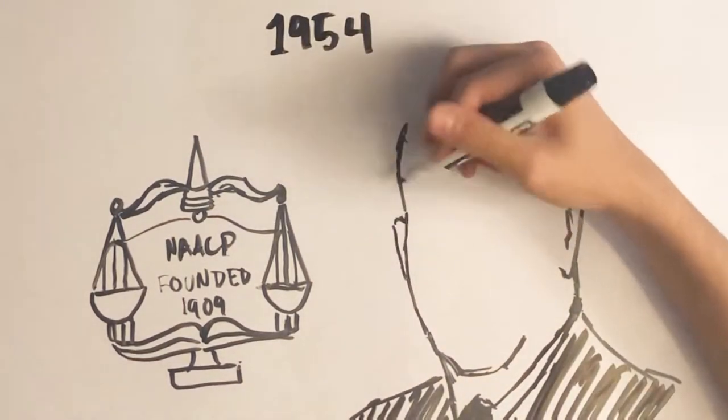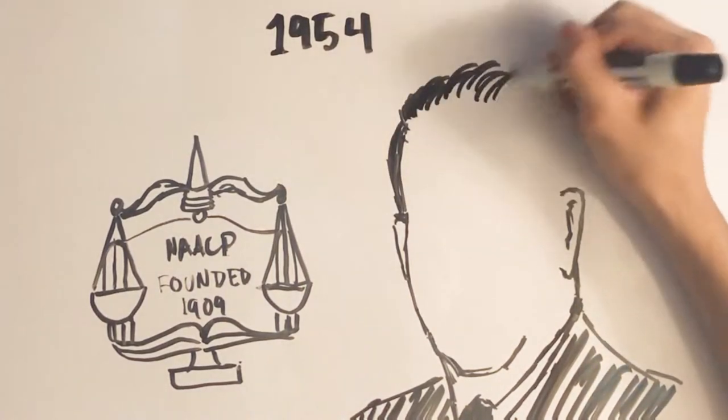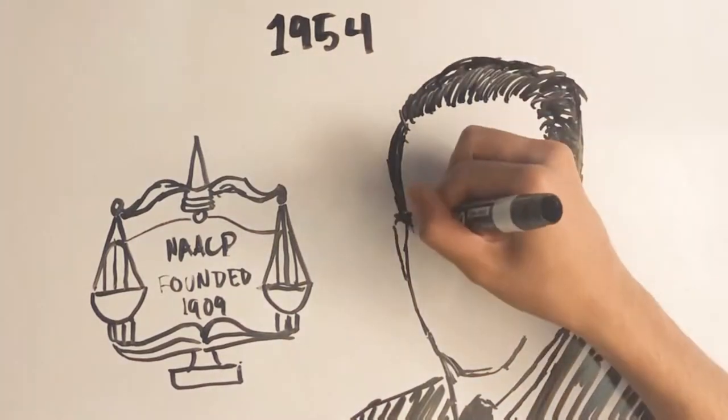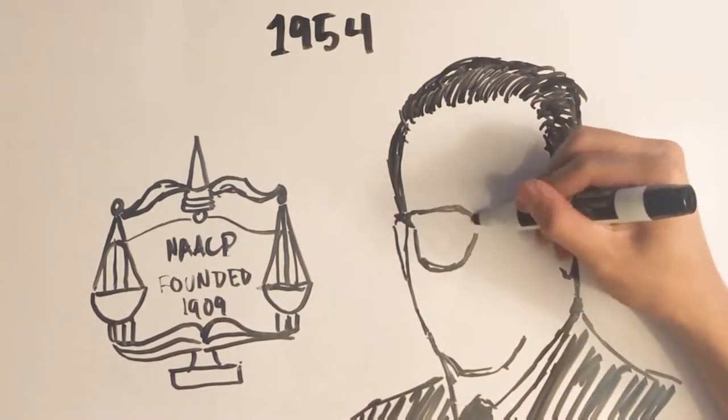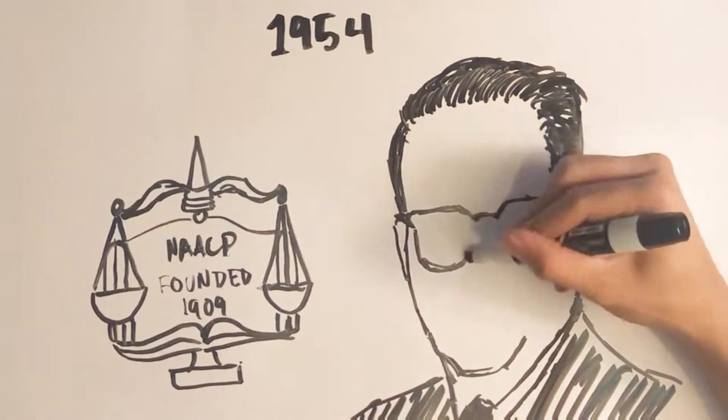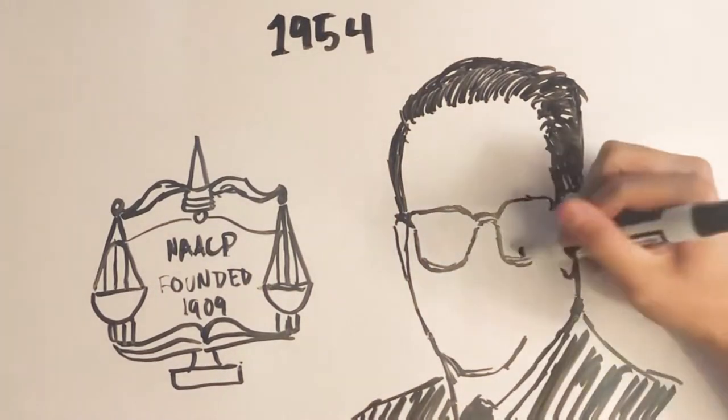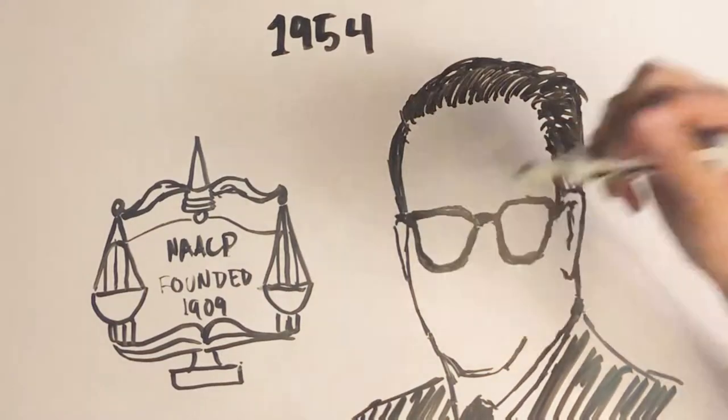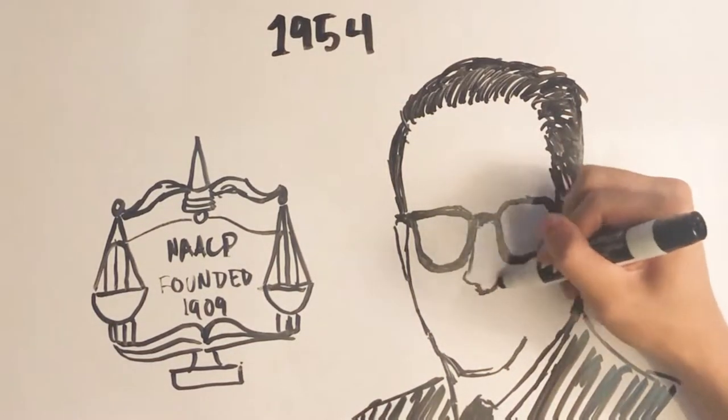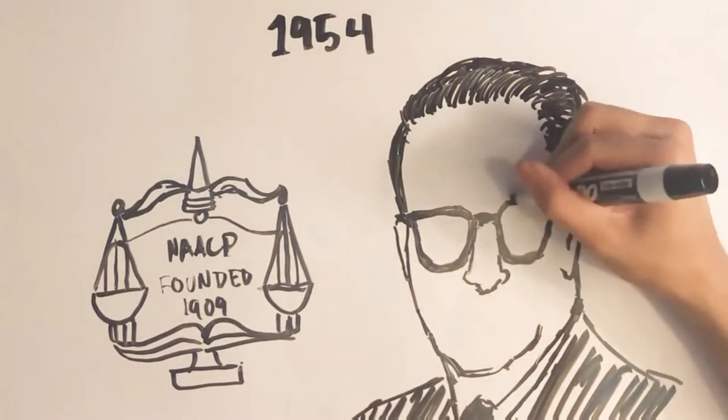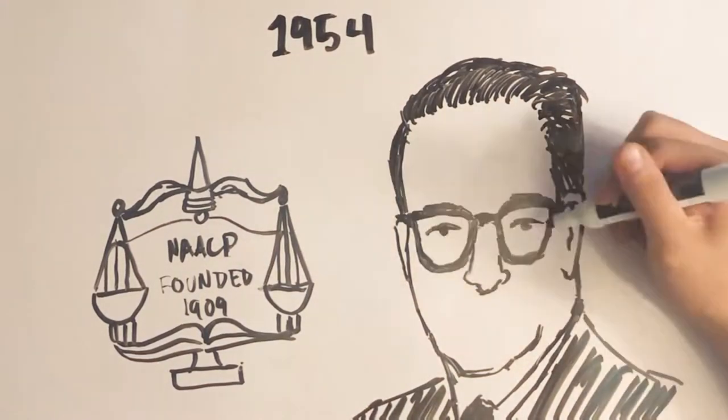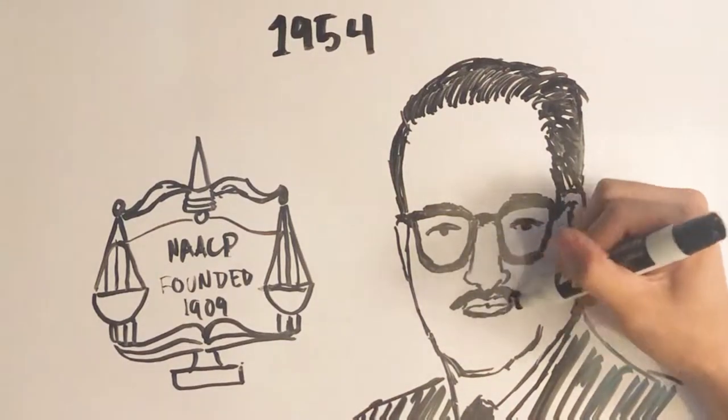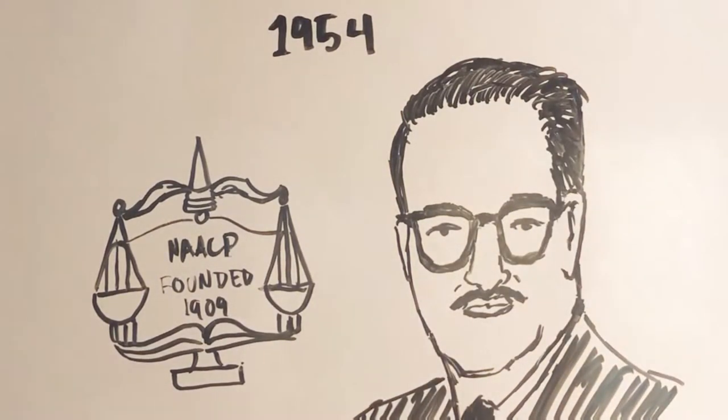Chief Justice Earl Warren's statement from the case's transcript read, we conclude that in the field of public education, the doctrine of separate but equal has no place. Separate educational facilities are inherently unequal. Therefore, we hold that the plaintiffs and other similarly situated for whom the actions have been brought are, by reason of the segregation complained of, deprived of the equal protection of the laws guaranteed by the 14th Amendment.